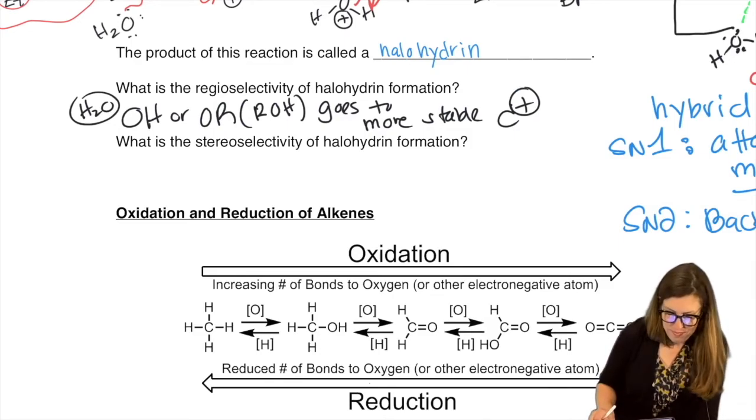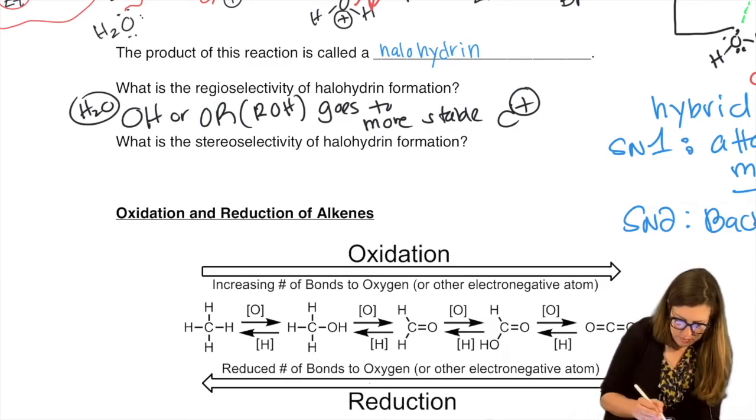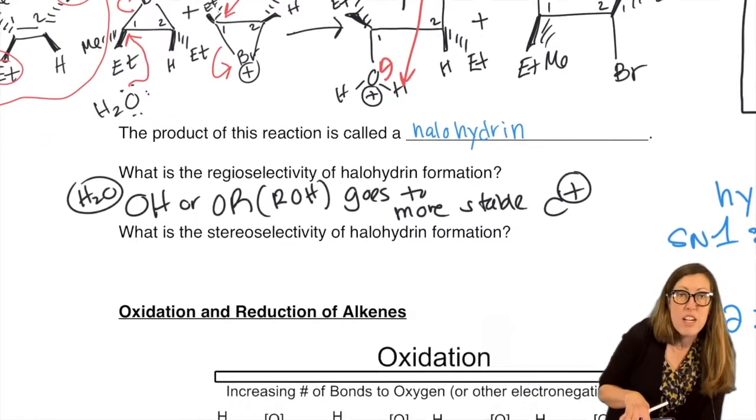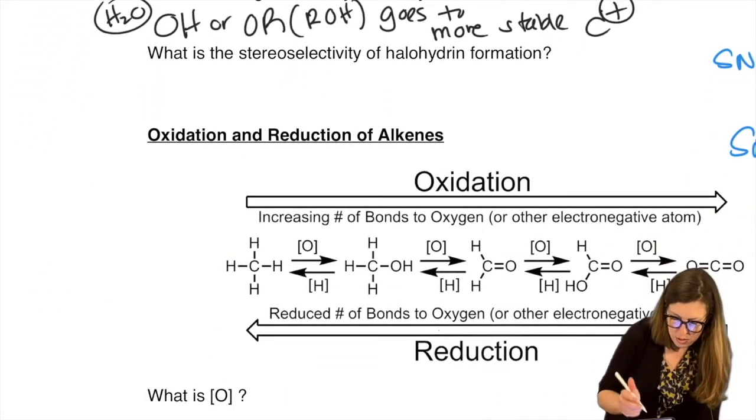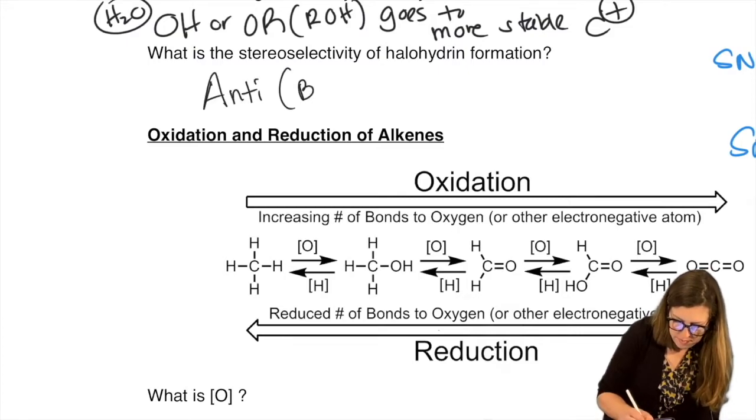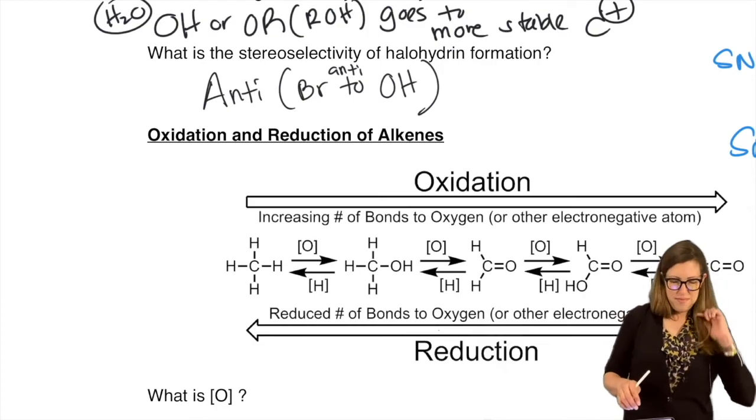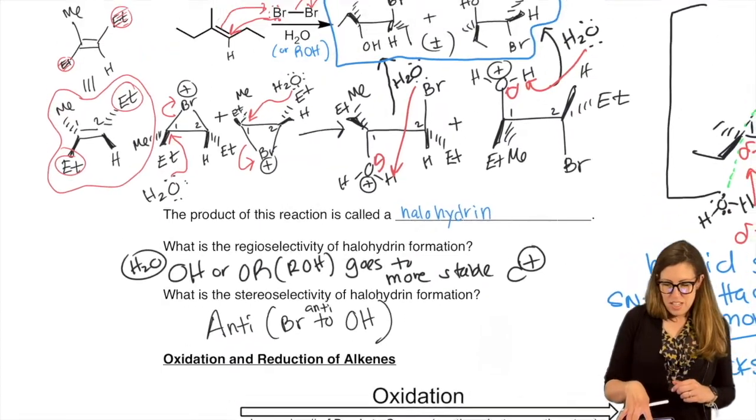Stereoselectivity: strictly anti, still. We get a pair of enantiomers, right? These are exact opposite. This is plus-minus. But they are anti, the anti set only.